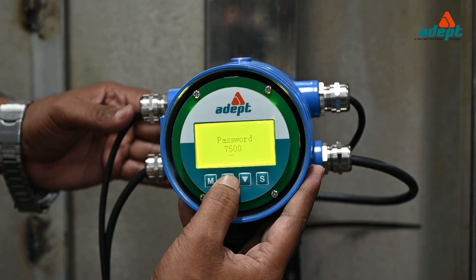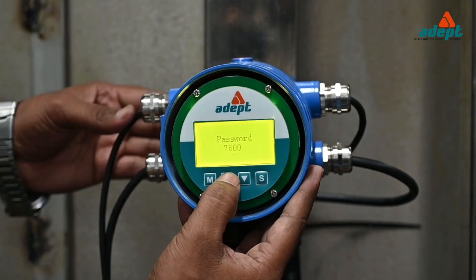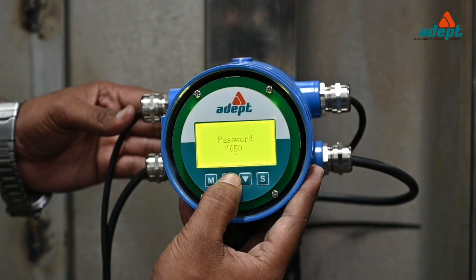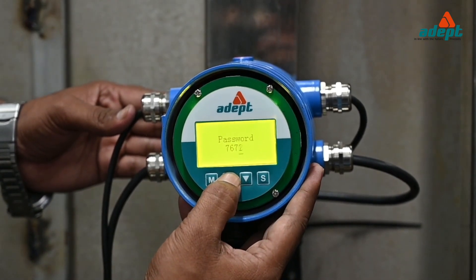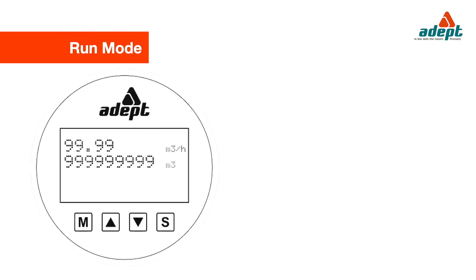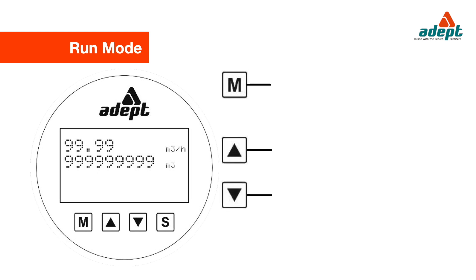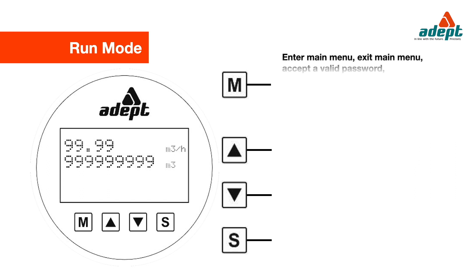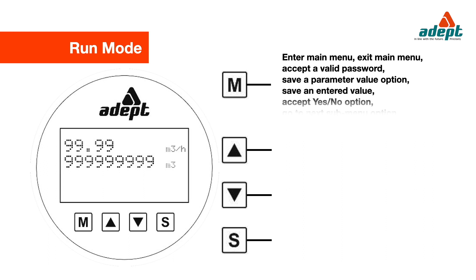runtime values, setting and programming new values, and selecting between certain functional options. To help you navigate through the menu, it is useful to understand the nature of the actions of the four tactile switches. Menu key: enter main menu, exit main menu, accept a valid password, save a parameter value, save an entered value, accept yes/no option, go to next sub menu option.